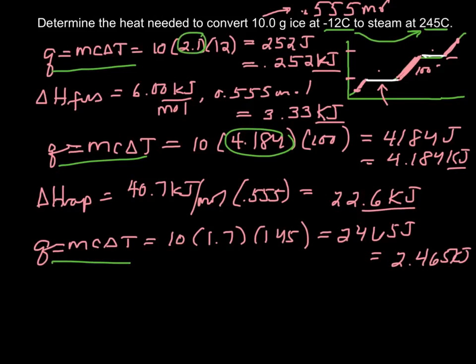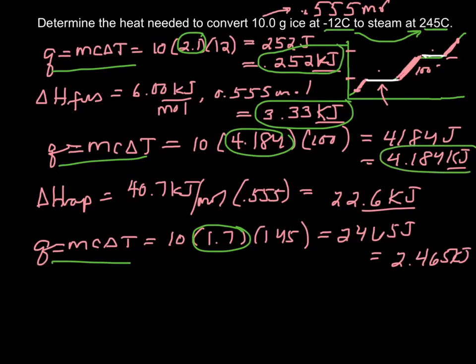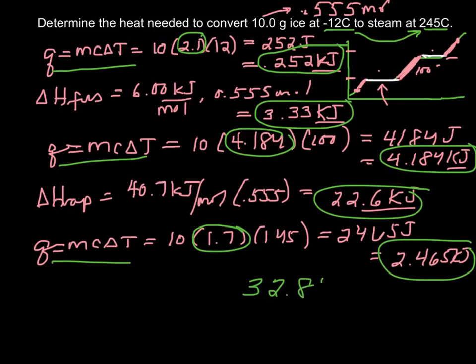These aren't very hard, they're just tedious. They take a while. What we're going to do now is take those five values and add them up. That will give us the total energy for this process. This is the longest one you could have, a five-step one. We could start at different places and have fewer steps. If you add all that up, you get 32.8 kilojoules. That's how you do the heat involved in changes of state.